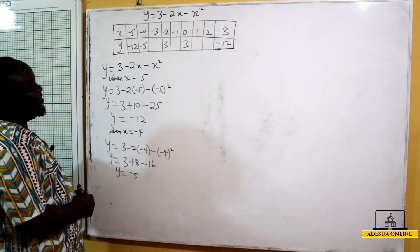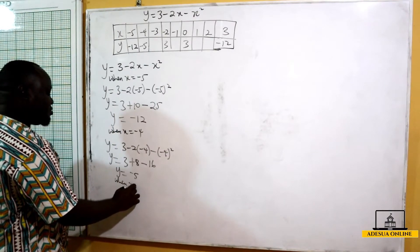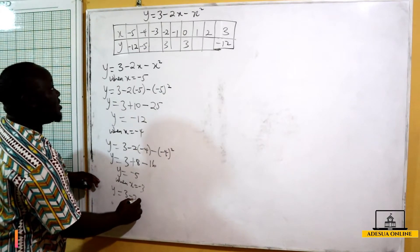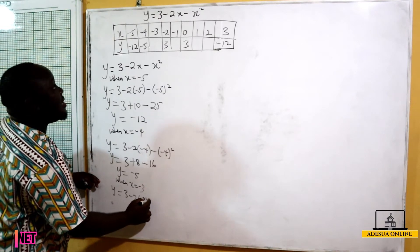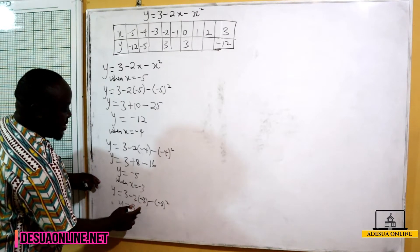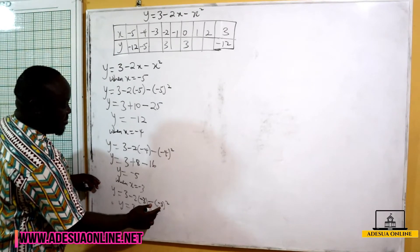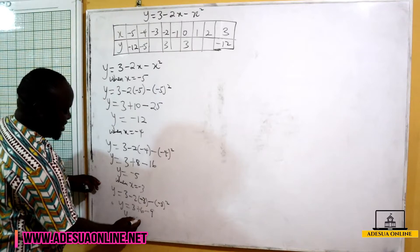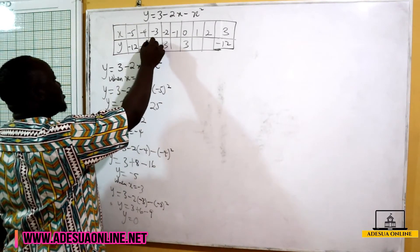When x equals negative 3, y equals 3 minus 2 times negative 3 minus negative 3 squared. That gives us 3 plus 6 minus 9, which is 9 minus 9, equals 0. So when x is negative 3, y is 0.